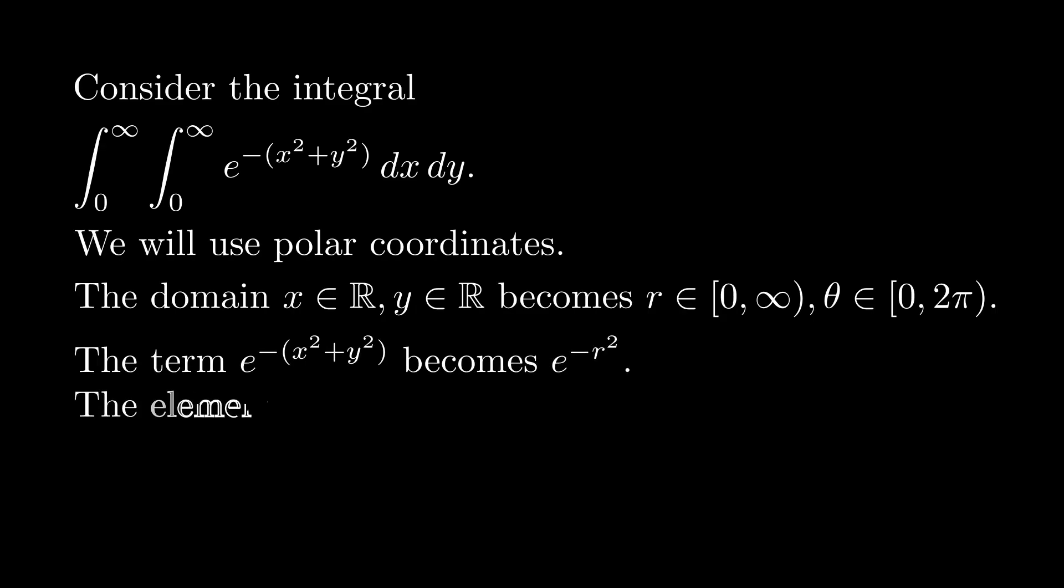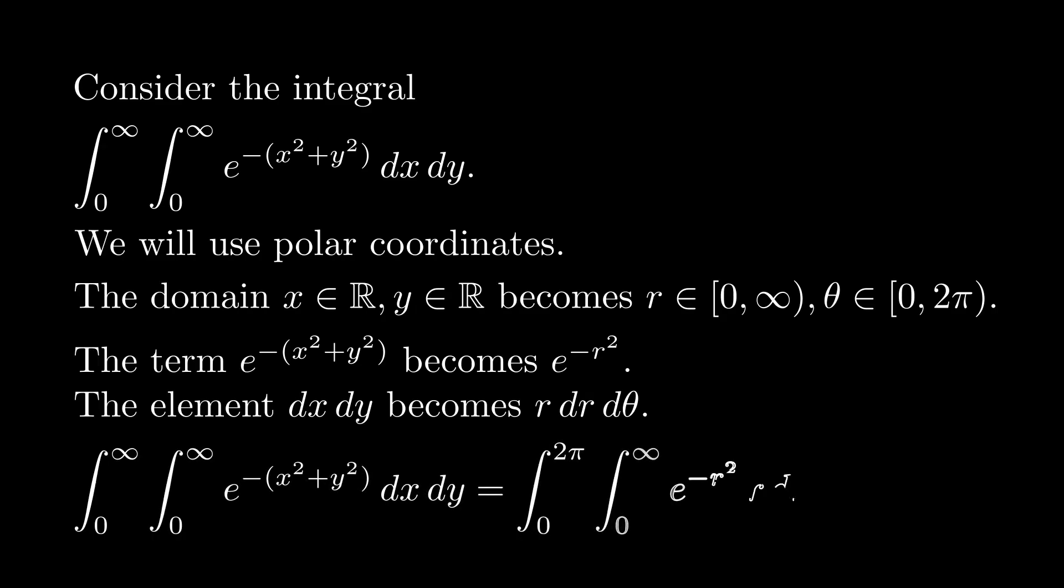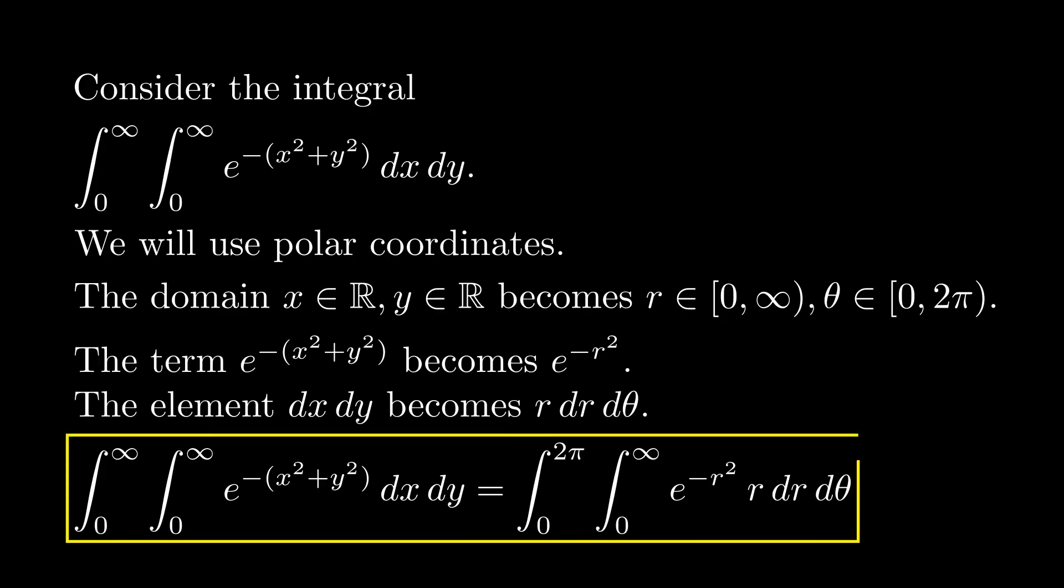x squared plus y squared becomes r squared, and remember the trick that the element dx dy becomes r dr d theta. So the rectangular integral of e to the minus x squared plus y squared over the whole plane becomes the polar integral, where we integrate the radius from 0 to infinity, theta from 0 to 2 pi, and we end up with this simplified integrand.